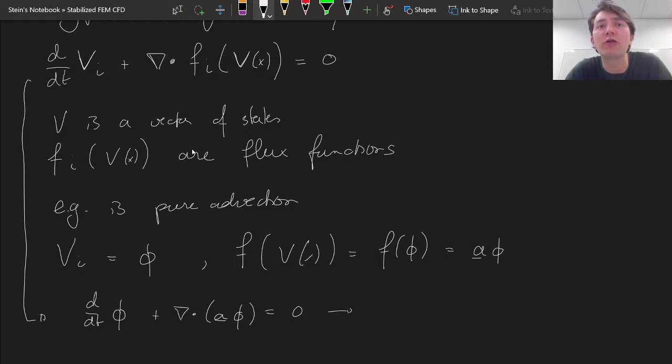If we had a divergence-free velocity field, then we recover the equation we've been working with, where we have a dot gradient of phi. That's our advective term.